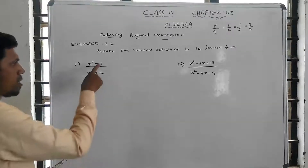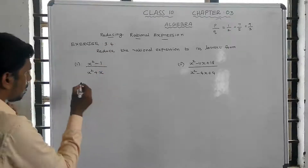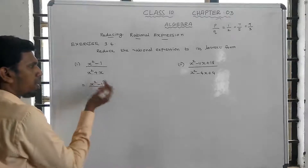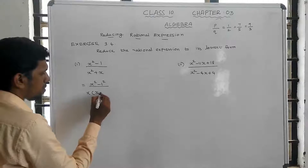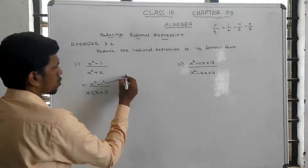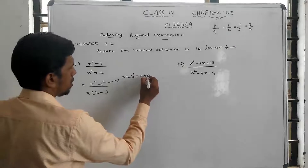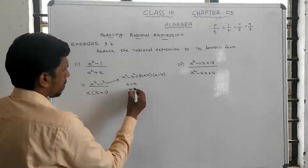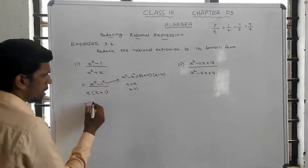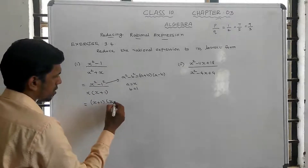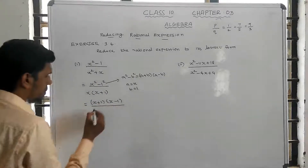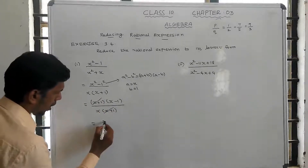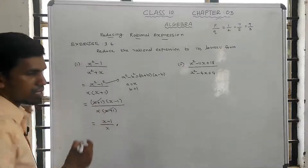When factoring is applied, the numerator x squared minus 1 equals x plus 1 times x minus 1, and the denominator x squared plus x equals x times x plus 1. So if we cancel x plus 1, the remaining answer is x minus 1 divided by x. This is the simplification result.